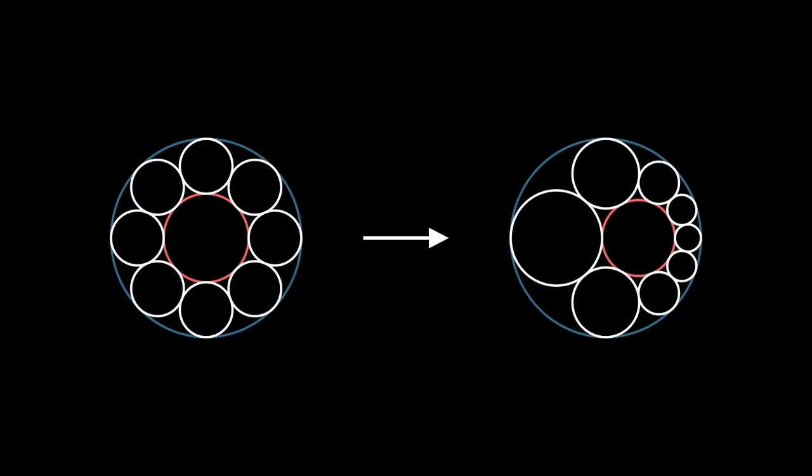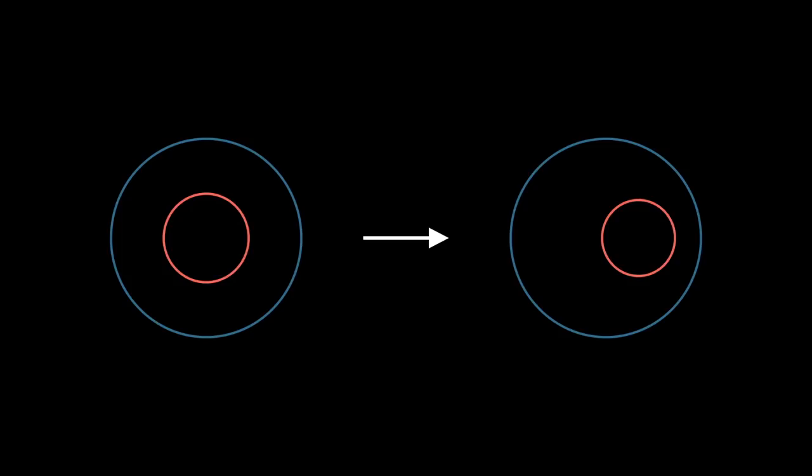So that proves Steiner's porism, or at least it proves it for this specific combination of red and blue circles, we still need to check that this method can construct every single possible pair of inner and outer circles around which we can form a Steiner chain.